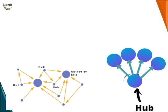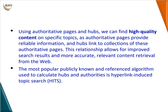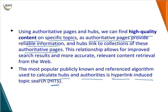Wikipedia is a hub, and this hub website has some websites included in it — if you click on them, you will be routed to those particular pages. Using authoritative pages and hubs, we can find high-quality content on specific topics, as authoritative pages provide more reliable information and a hub links to a collection of these authoritative pages. The most publicly known algorithm used to calculate hubs and authorities is HITS — Hyperlink Induced Topic Search.